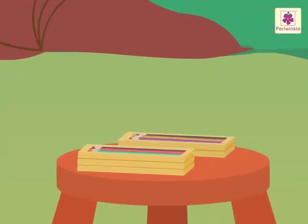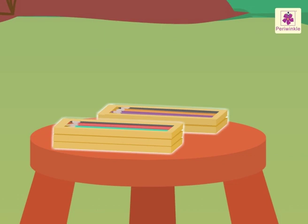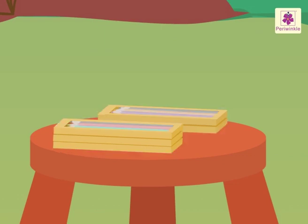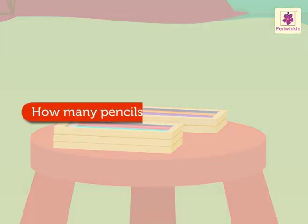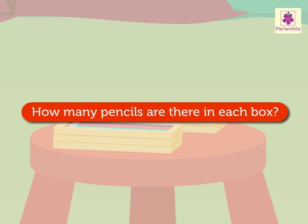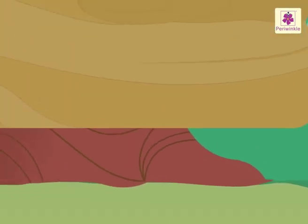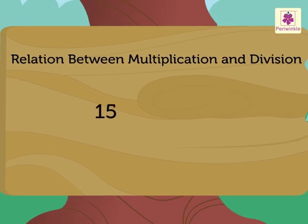Given that there are 5 boxes and 15 pencils, how many pencils are there in each box? Here, we divide 15 by 5 to find the quotient. So, 15 divided by 5 is equal to 3.